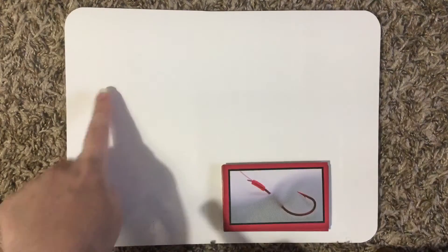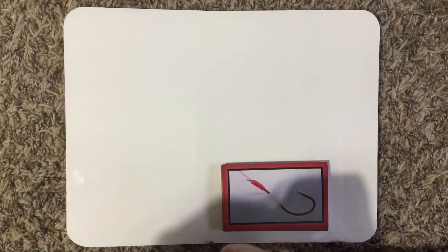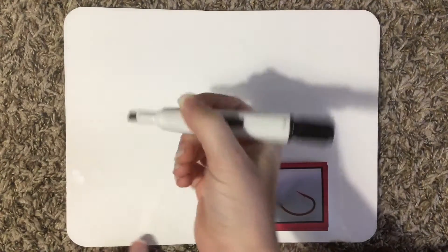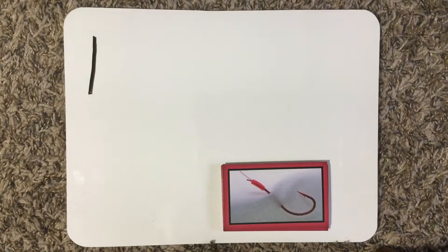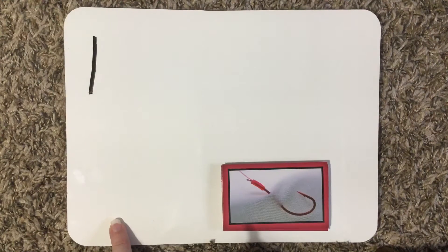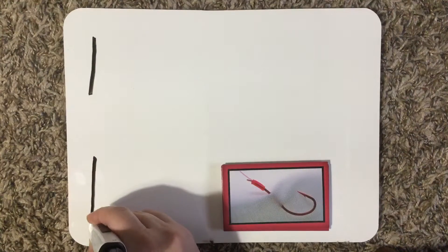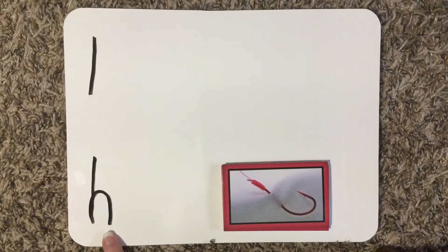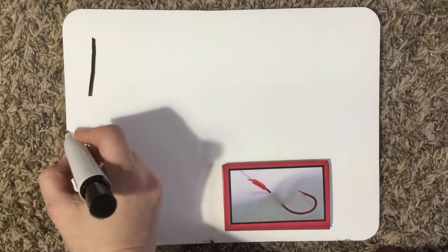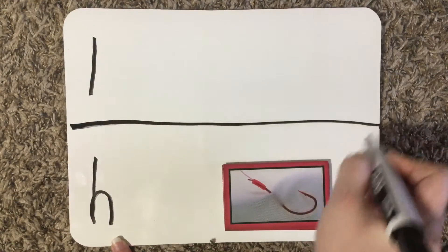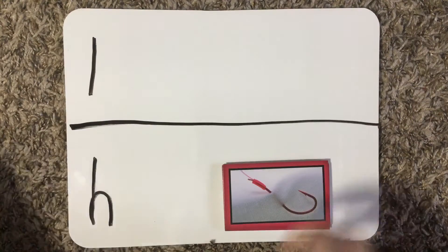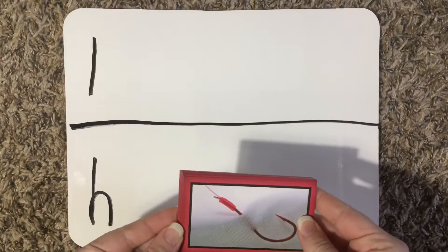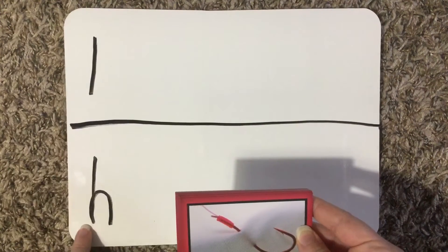First, I'm going to write the letters out over here. I'm going to write the letter L on top. To make the letter L, we start at the top and straight line down, just like that. That's the letter L — the letter L makes the sound L. Then down here I'm going to make the letter H. H goes down, hump. The letter H says H. I'm going to draw a line in the middle to separate them. And now we're going to take a look at the pictures and decide if the pictures should go with L or H.